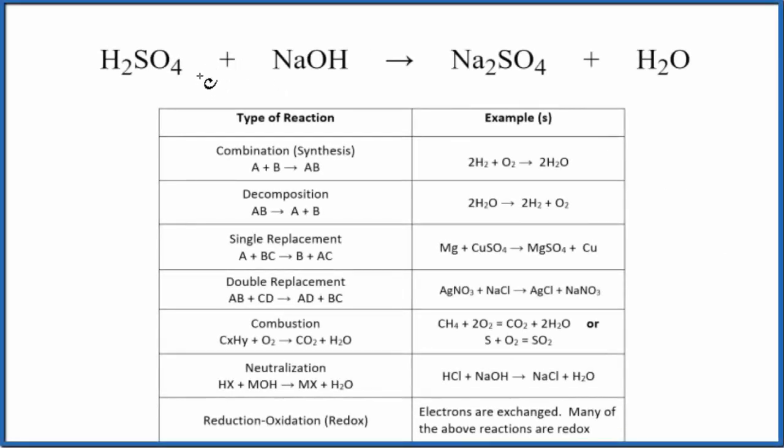In this video we'll identify the type of reaction for H2SO4 plus NaOH. This is sulfuric acid plus sodium hydroxide. Right off you should recognize that sulfuric acid is a strong acid. And you should recognize that sodium hydroxide, this hydroxide bonded to a metal, that's going to be a base.